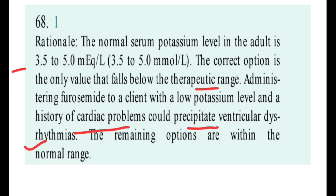If furosemide is administered in a hypokalemia condition, it can precipitate ventricular dysarrhythmia in a cardiac patient. So you have to hold the injection and report to the doctor. The key point: normal potassium is 3.5 to 5 mEq/L. If it is below normal range when furosemide is due, stop the injection and report to the doctor, as hypokalemia plus furosemide can precipitate ventricular arrhythmia.